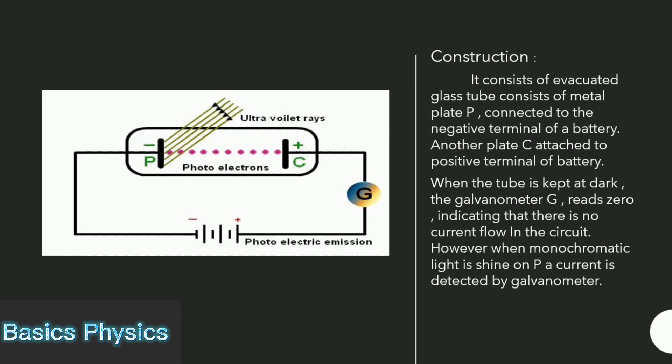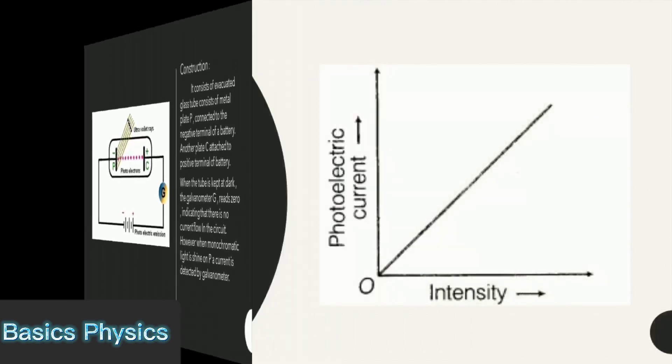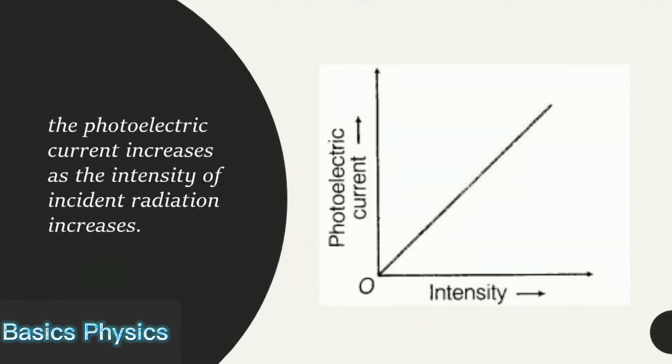When incident light is cut off, the galvanometer again shows no deflection. The photoelectric current increases as the intensity of incident radiation increases.